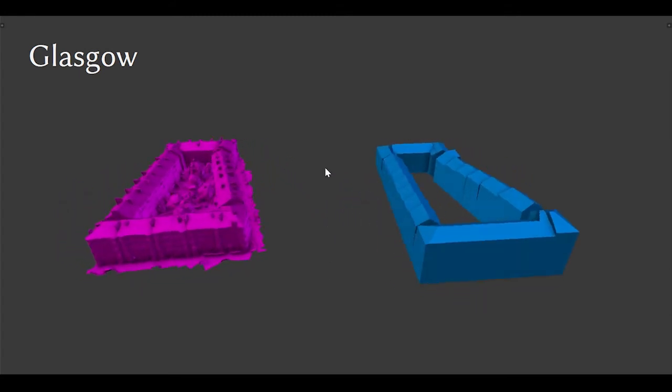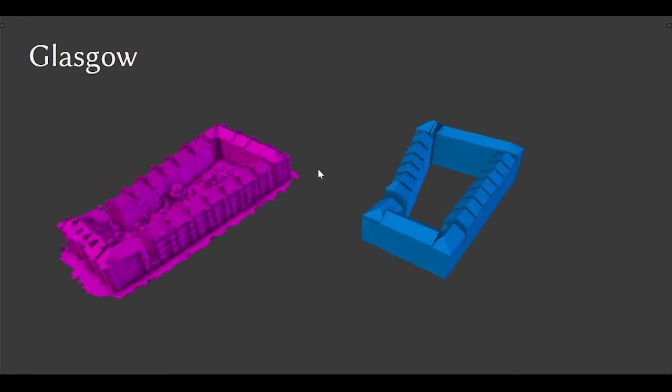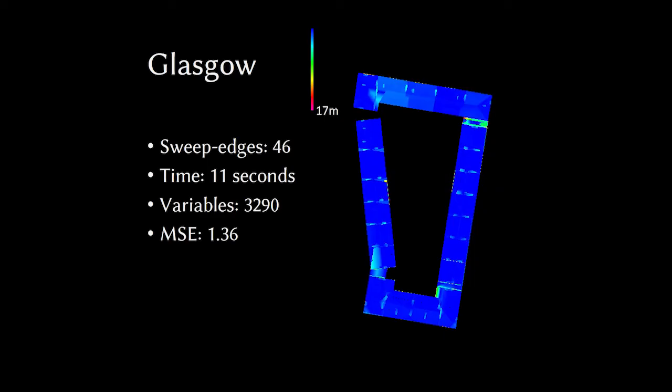The next example we look at is from Glasgow. See the input again in pink and the output in blue on the right. The Glasgow problem contained 46 sweep edges, only 11 seconds to optimize, had 3000 variables and a mean squared error of 1.3 meters. Again, we can see very good matching between the geometry and the mesh as shown on the right of this plot. The largest errors that we can see are between the individual houses where, for example, chimneys and deep crevices between buildings are not well represented.